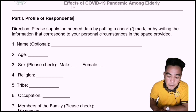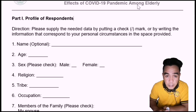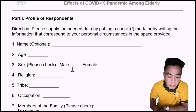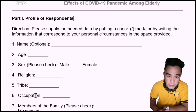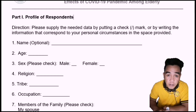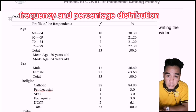In this study, the Effects of COVID-19 Pandemic Among Elderly, one of the main scales to be included must be the age, sex — male and female — religion, tribe, occupation, and among others. As a statistician, one way to treat this data is the use of the frequency and percentage distribution.